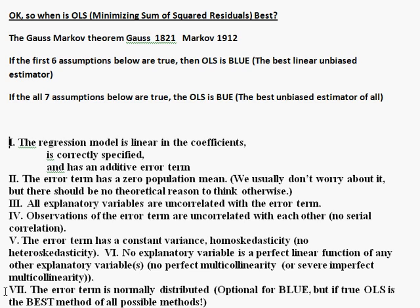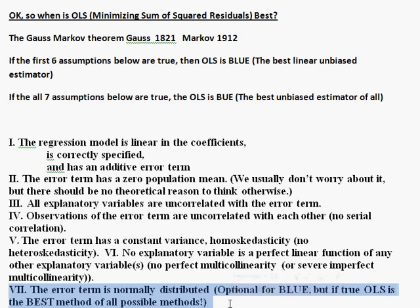If we add the seventh assumption — which is one of the simplest — that the stochastic error term is normally distributed, we can test this by observing the residuals to see if those are normally distributed, for example by making a histogram or using other methods. If the seventh assumption is also true, then out of any complicated fancy method we could possibly invent, minimizing the sum of the squared residuals is the absolute best method. There's no better technique.